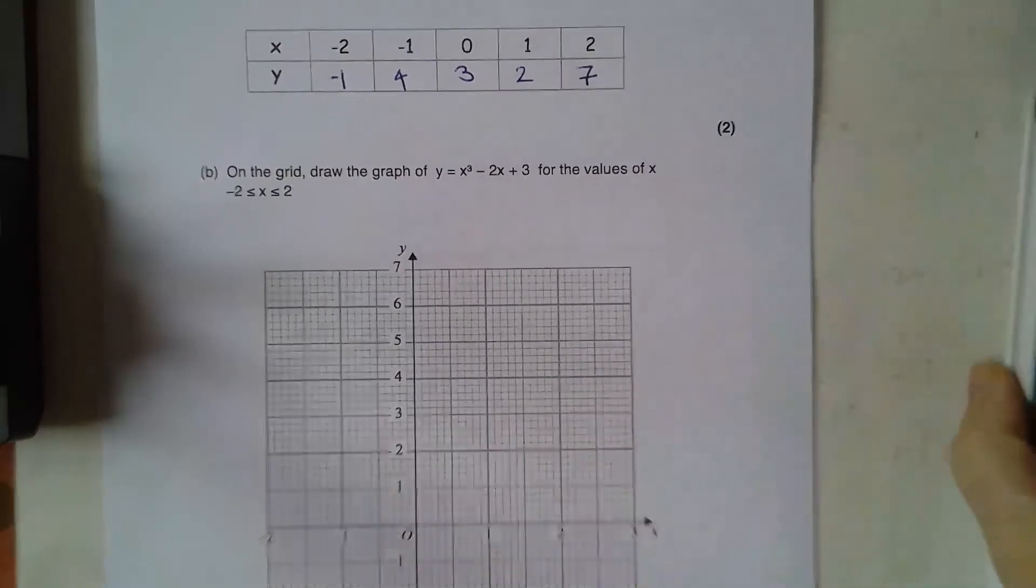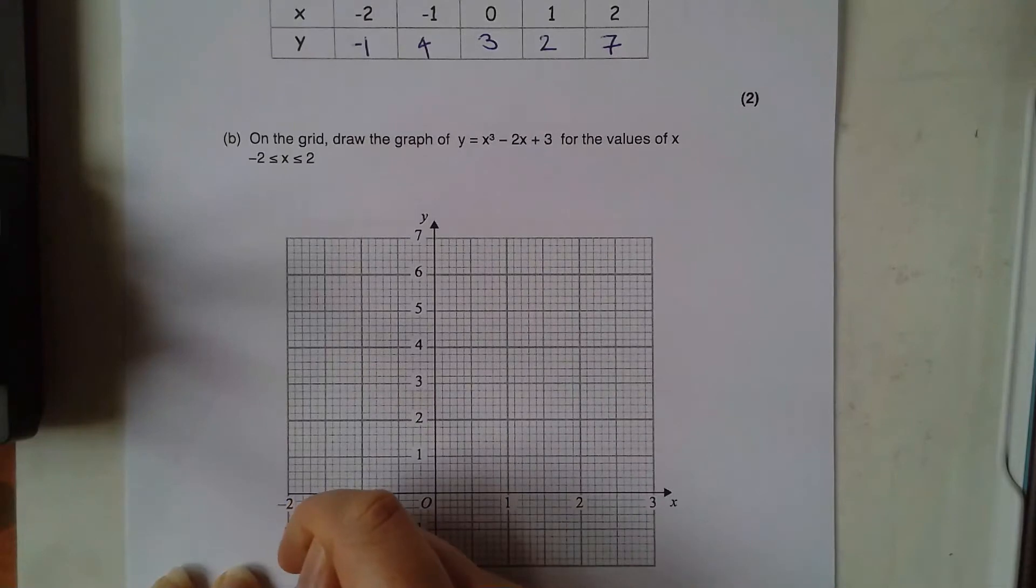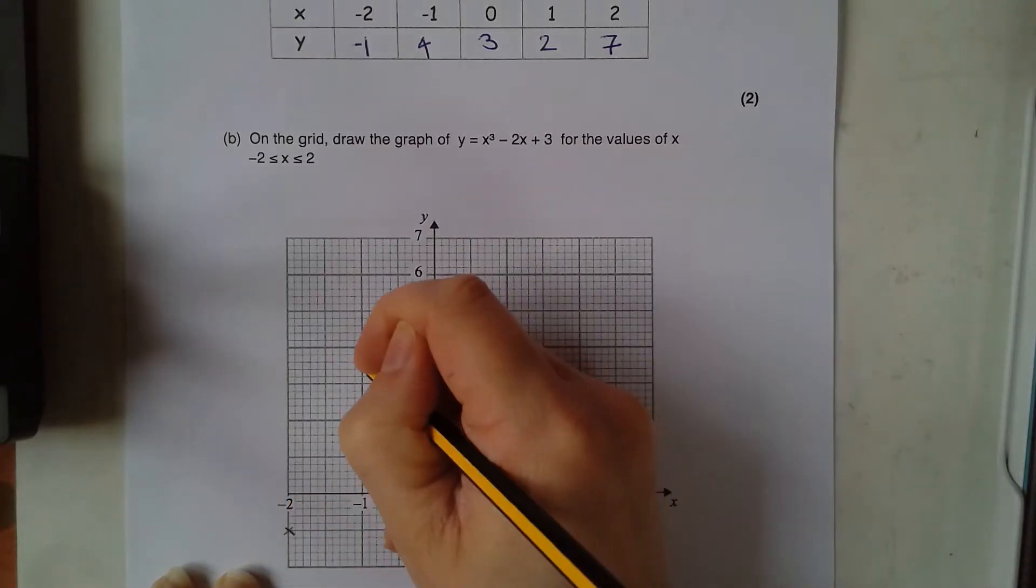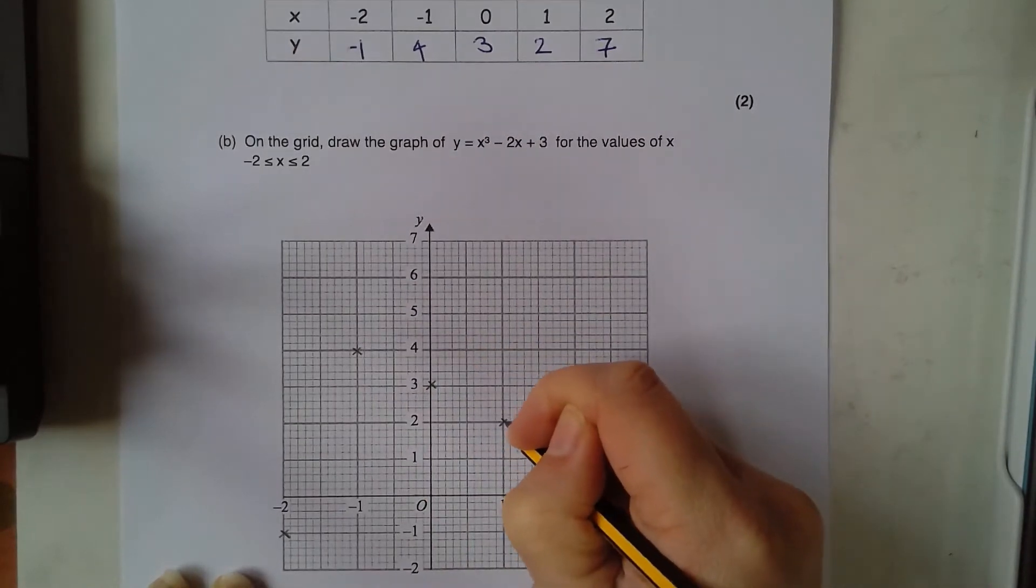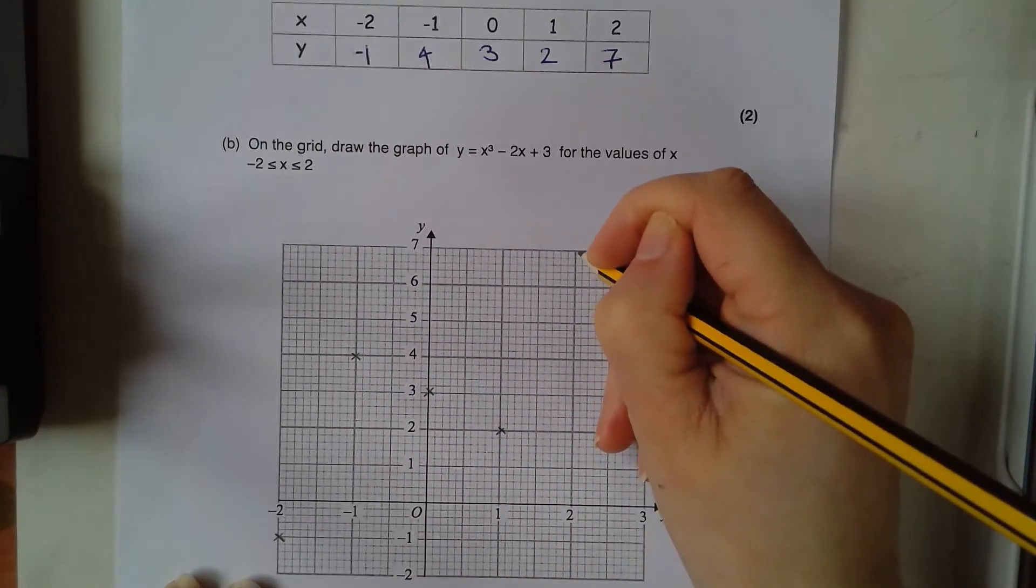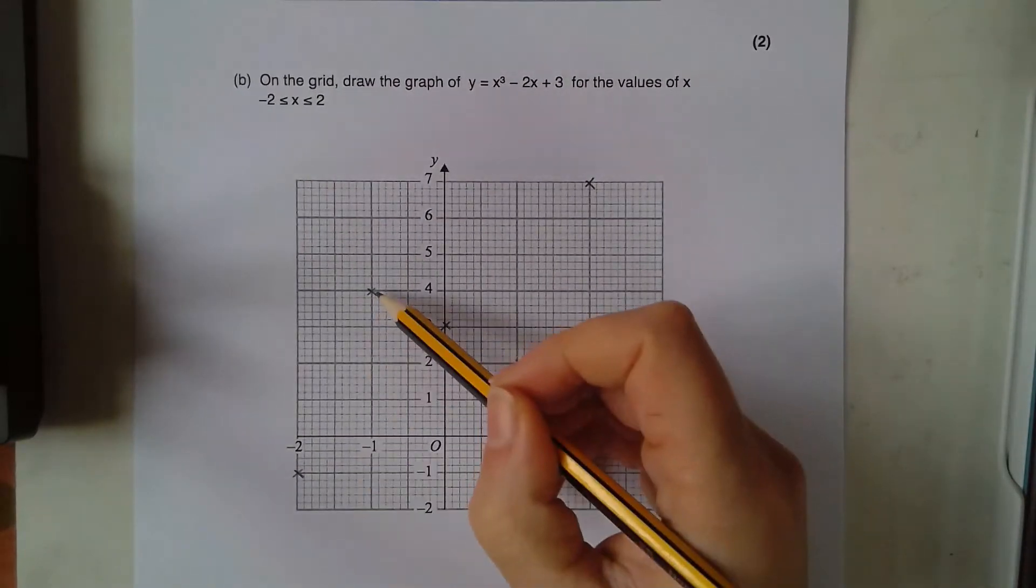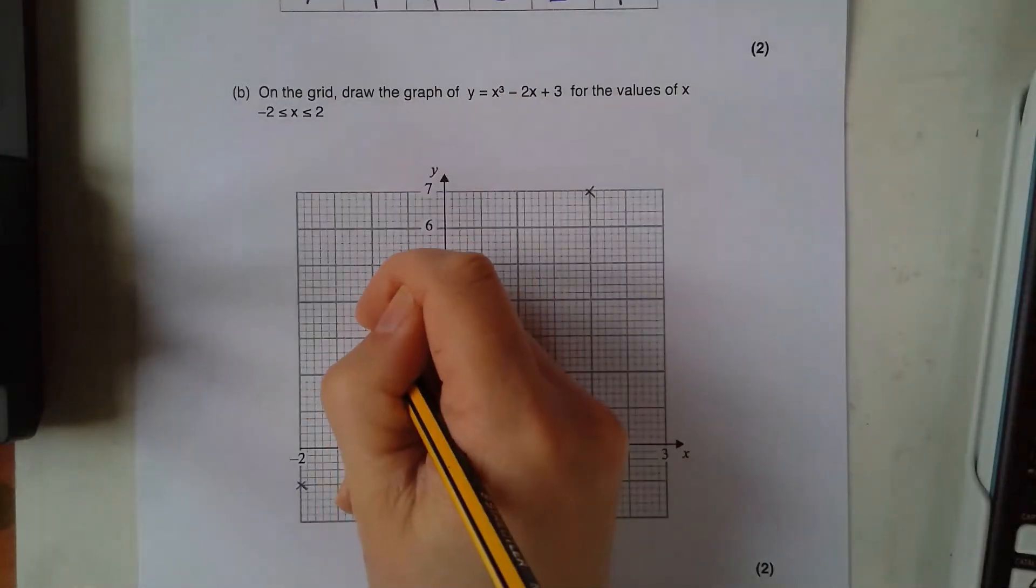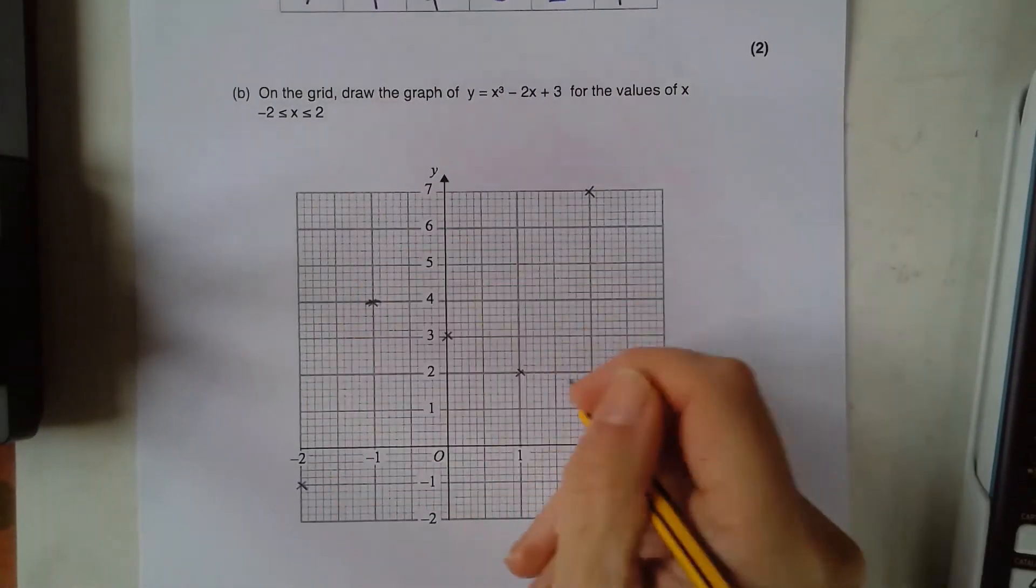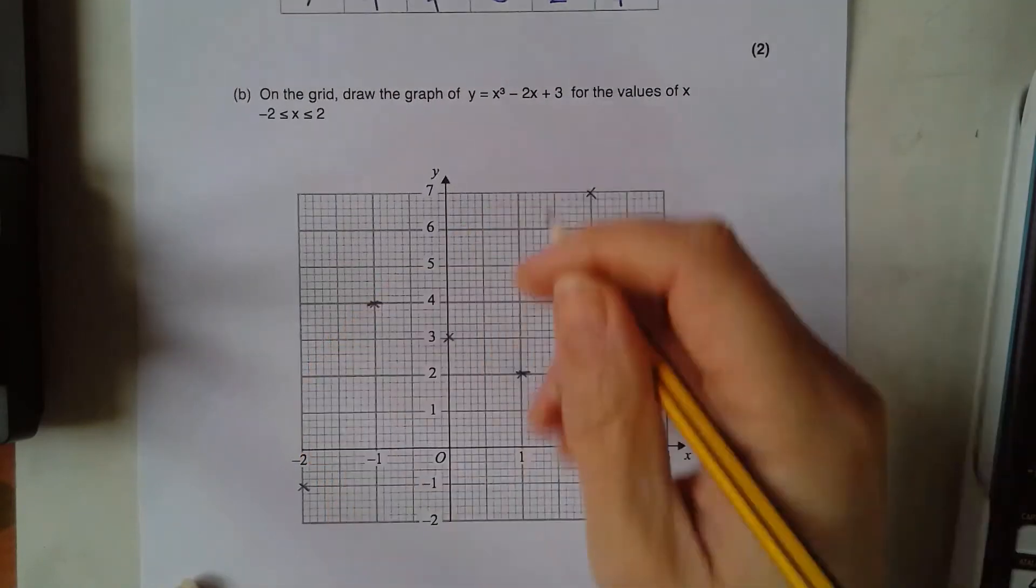So let's plot that on here. Negative 2 is at negative 1, negative 1 is at 4, 0 is at 3, 1 is at 2, and 2 is at 7. Remember we're not joining with straight lines here, it's a curve where this here is a maximum and this is a minimum.